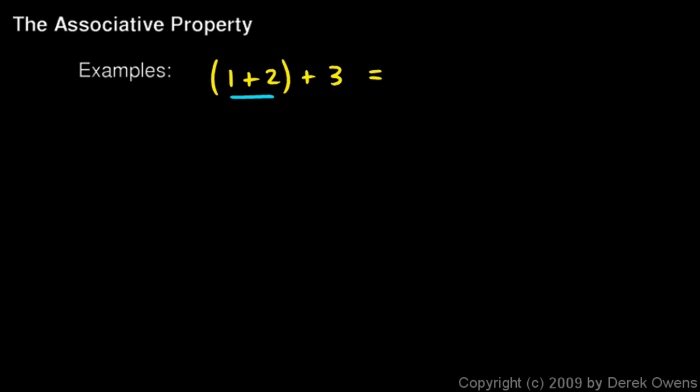So, we can do this in our head. 1 plus 2 will be 3, and then when I add the other 3 I'll get 6. The associative property says that this will equal 1 plus, in parentheses, 2 plus 3. If I evaluate the right side, 2 plus 3 gives me 5, and then I add the 1 and I get 6. So I get 6 either way. It doesn't matter if I group the 1 and the 2, or the 3 and the 2.